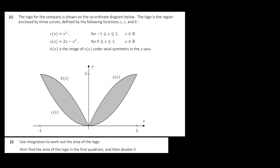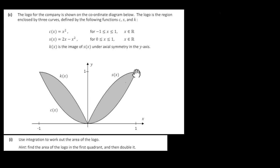Now let's look at part C. The logo for a company is shown on a coordinate diagram. The logo is the region enclosed by three curves defined by functions C, S, and K, where C of X equals X squared, S of X equals 2X minus X squared (a negative quadratic), and K is the image of S under axial symmetry in the Y-axis. We use integration to find the area. We'll find the area in the first quadrant and then double it.